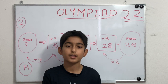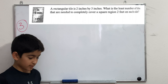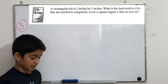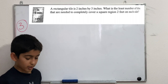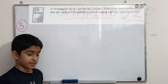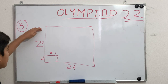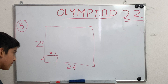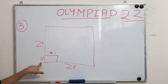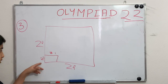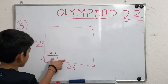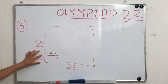The third problem says: a rectangular tile is 2 inches by 3 inches. What is the least number of tiles needed to completely cover a square region 2 feet on each side? The side length of the square is 2 feet by 2 feet, and we need to fit tiles that are 2 inches by 3 inches.